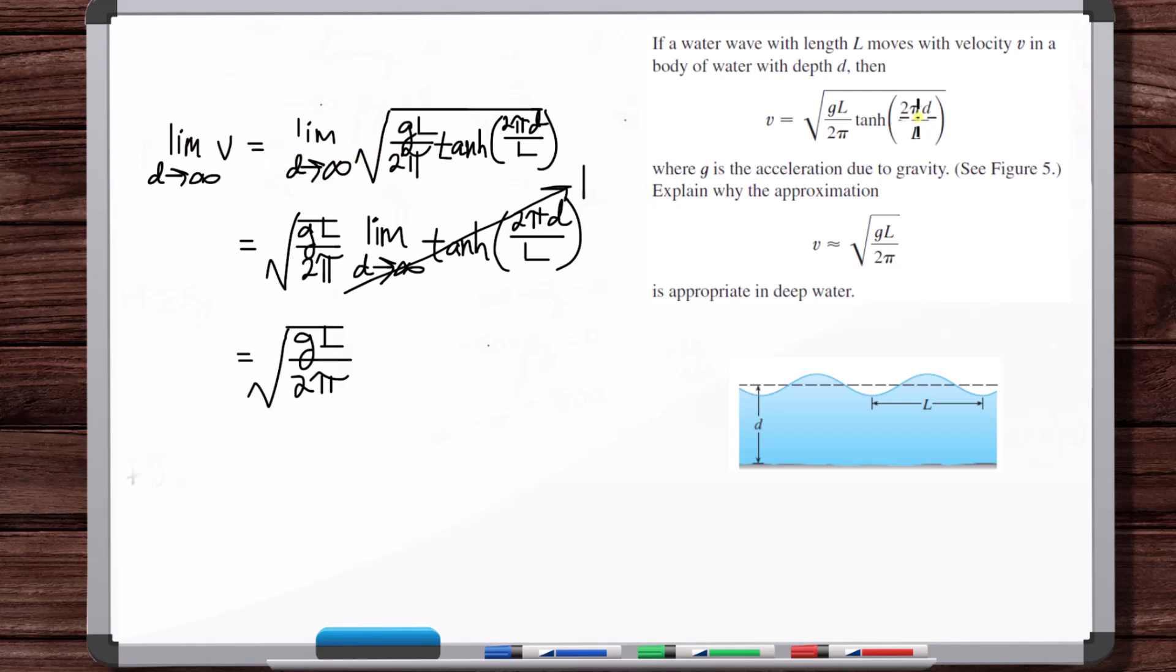That's what, if you have a deep ocean, D is getting really large. So this is what V is approaching. This is the limit as D approaches infinity of V. So if you have sufficient ocean depth in deep water, you can just approximate the velocity of ocean wave with this equation.